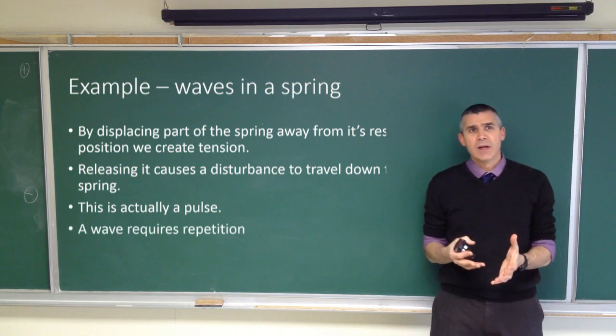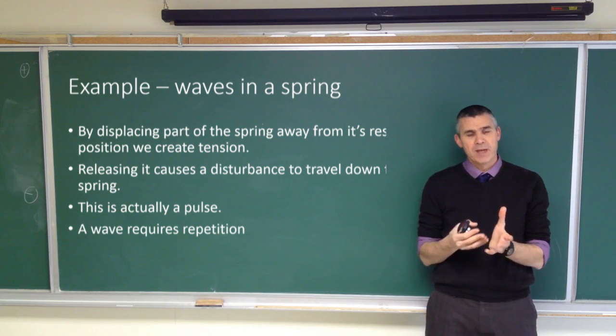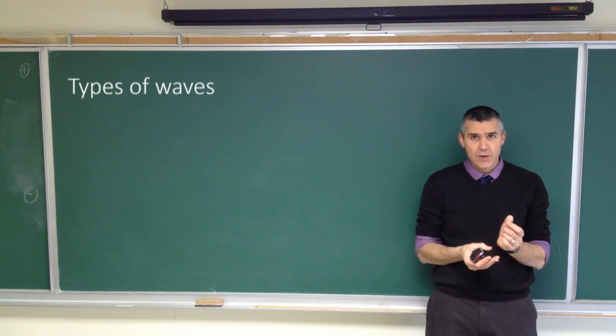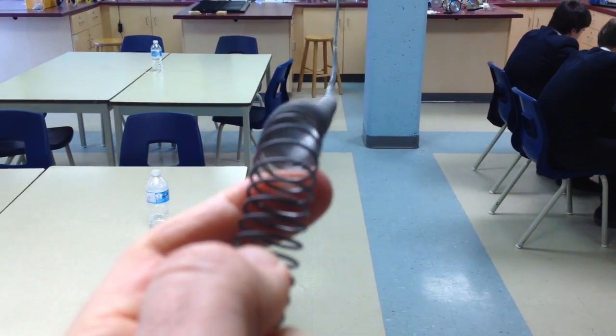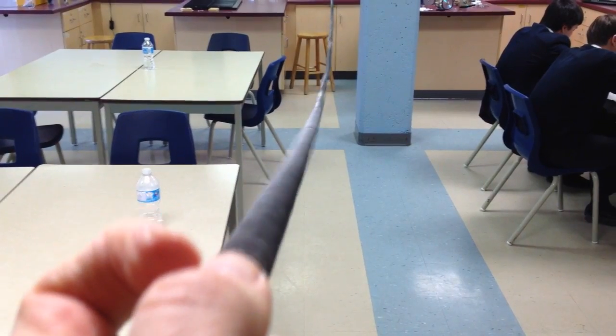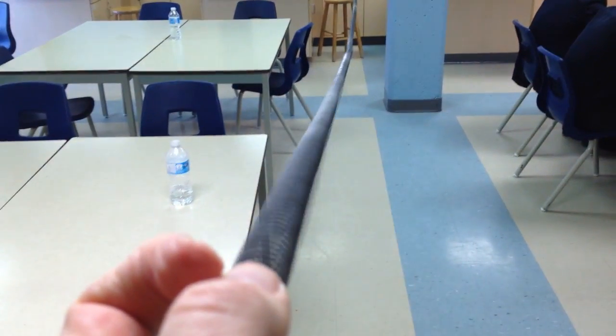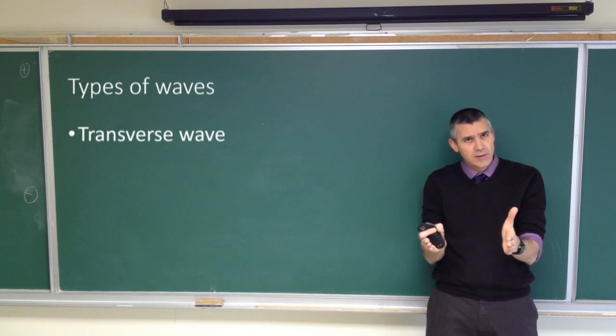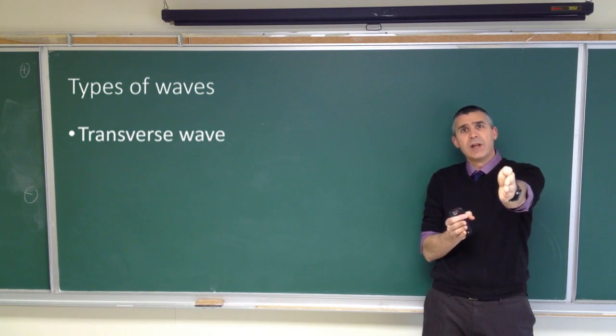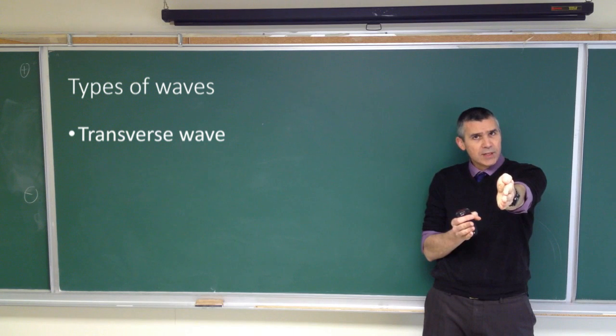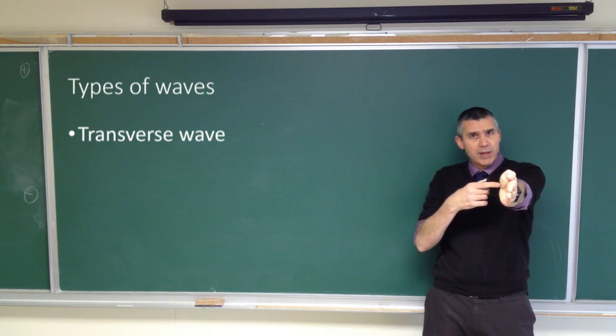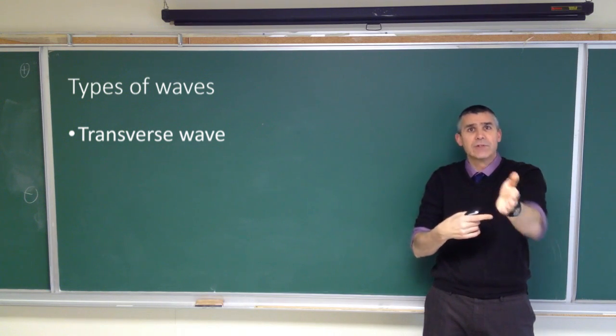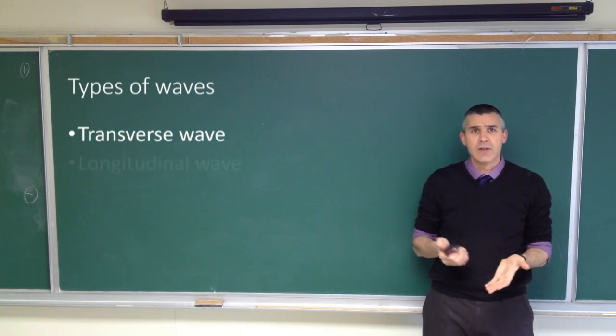So the types of waves we can have - if we have a spring and we deflect part of that spring and let it go, then there is a sideways deflection moving down the length of the spring. We call that a transverse wave, because displacement is perpendicular to the direction of motion. So if the motion of the wave is down the length of the spring, but the motion of the particles are this way, transverse to the direction of motion, we call that a transverse wave.